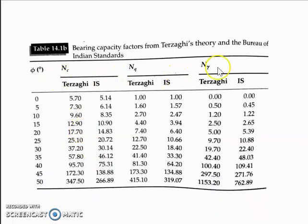This is a table which gives you the relation of Nc, Nq, and Nγ proposed by Terzaghi against the φ values. For instance, for angle of internal friction equal to 30 degrees, Terzaghi proposed Nc as 37.2, Nq as 22.5, and Nγ as 19.7. The Indian Standard values corresponding to angle of internal friction 30 degrees are shown besides. Where Terzaghi proposed 19.7, IS code proposes 22.4, etc.